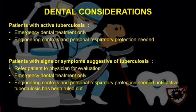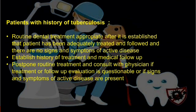Second, for a patient with active signs or symptoms suggestive of TB: refer the patient to a physician for evaluation. Only emergency dental treatment should be carried out. Engineering controls and personal respiratory protection are needed until active tuberculosis has been ruled out. Third, for a patient with a history of tuberculosis: routine dental treatment is appropriate after it is established that the patient has been adequately treated and there are no signs or symptoms of active disease. Establish history of treatment and medical follow-up. Postpone routine treatment and consult with a physician if treatment or follow-up evaluation is questionable or if signs and symptoms of active disease are present.